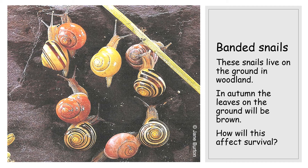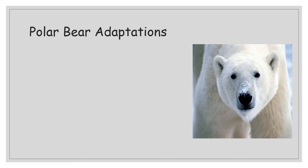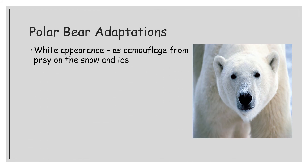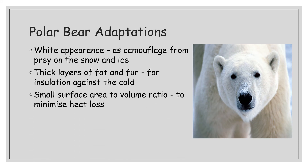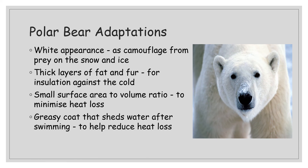That is how organisms over the course of time become adapted to their surroundings and more suited to survival. Over millennia, if not millions of years, we end up with organisms that are incredibly well adapted to the conditions in which they live. A great example is the polar bear. Polar bears live in the Arctic Circle and hunt seals. Their adaptations include a white appearance for camouflage against the snow and ice, thick layers of fat and fur for insulation against the cold, a small surface-to-volume ratio to minimize heat loss, and a greasy coat that sheds water after swimming.